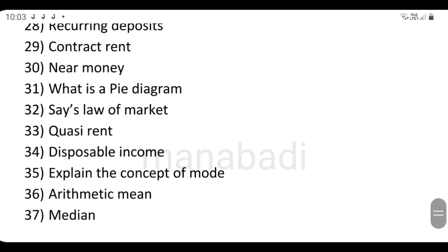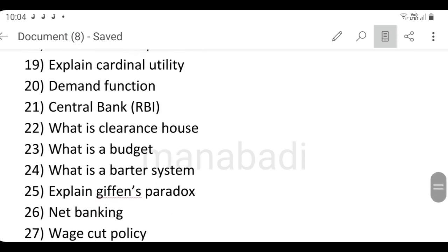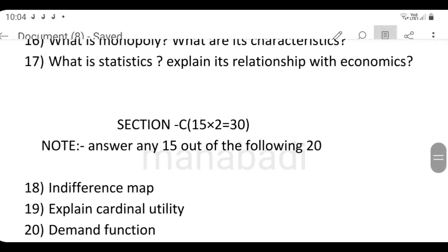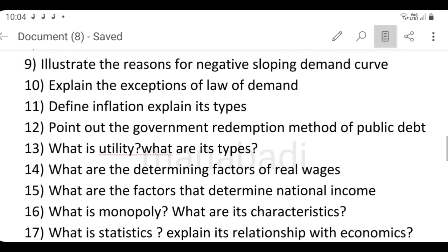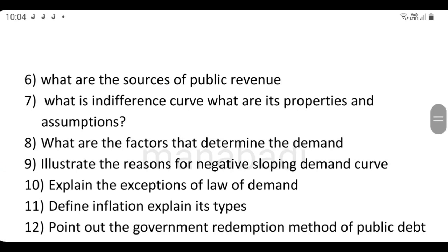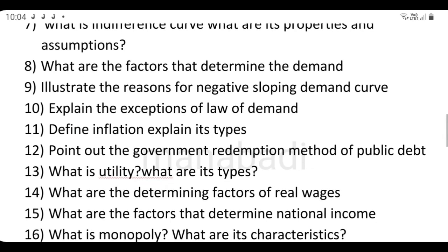Say's law of market is easy. Disposable income: salary minus tax, what remains with you is disposable income, simple equation, very easy. Mode, mean, median, their formulas, very helpful. Statistics and economics relation in shorts. Sources of public revenue and public debt are easy. Inflation types are also easy. If you write enough points, you'll get full marks.